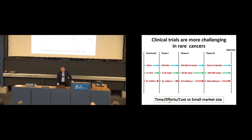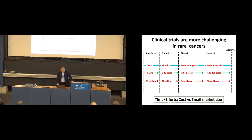Clinical trials are especially difficult to conduct in rare cancers. As you know, clinical trials cost a lot of time, effort, and money, and the market for rare cancer patients is quite small. Pharmaceutical companies hesitate to develop drugs for rare cancer patients. For example, in Japan, we have 100,000 new rare cancer patients every year, but for osteosarcoma we have only 300, and for Ewing sarcoma just 40 patients annually. So if drug companies develop drugs for those patients, they cannot recover their investment, and drugs for rare cancer patients remain quite limited.